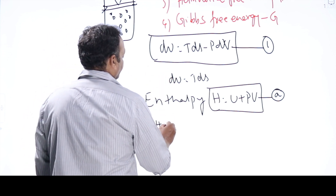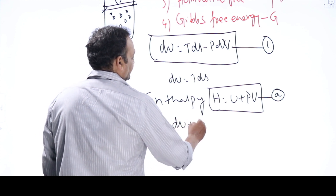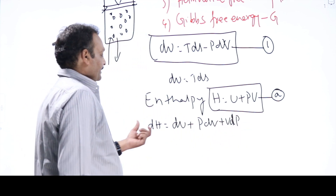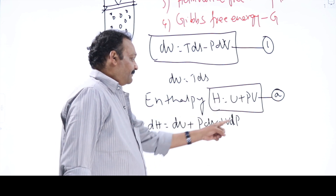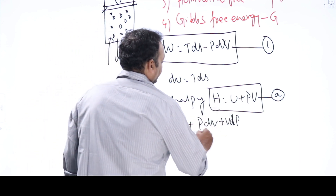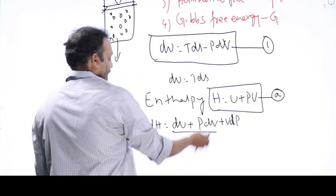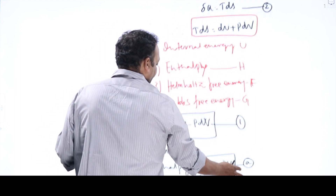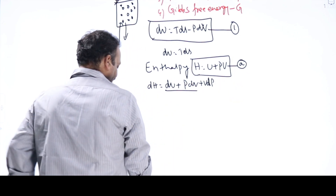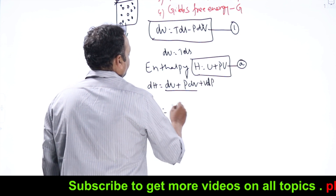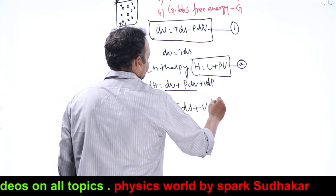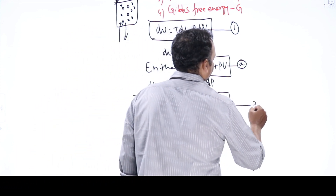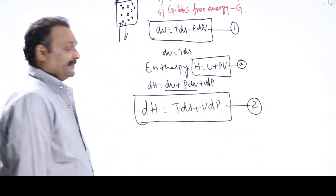Now, changes in enthalpy: dH equals dU plus P dV plus V dP. Now, dU plus P dV we have already seen equals delta Q, and from the combination of first and second laws of thermodynamics, dU plus P dV equals T dS. So I can take dU plus P dV as equal to T dS. Therefore, dH equals T dS plus V dP. This is the governing equation for changes in enthalpy — equation 2: dH equal to T dS plus V dP.